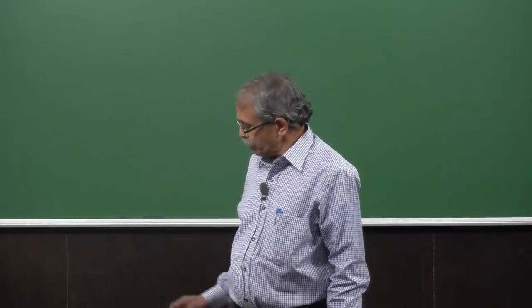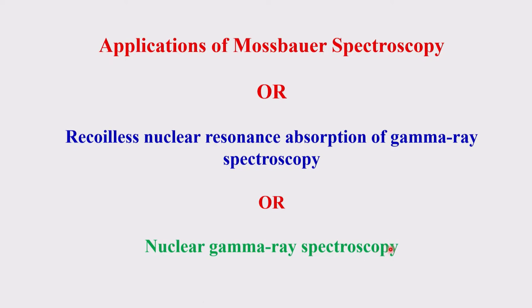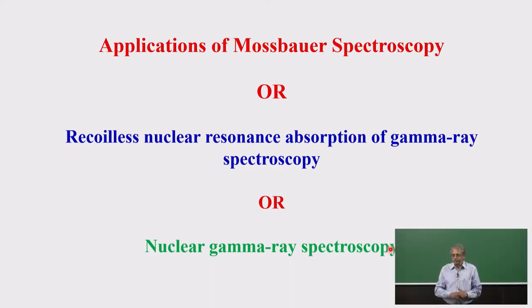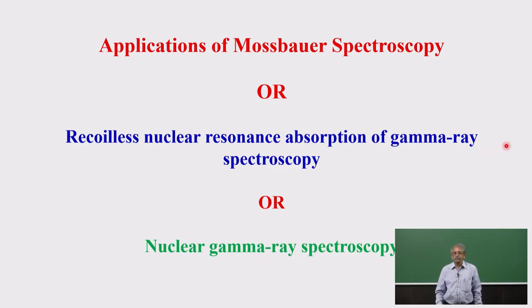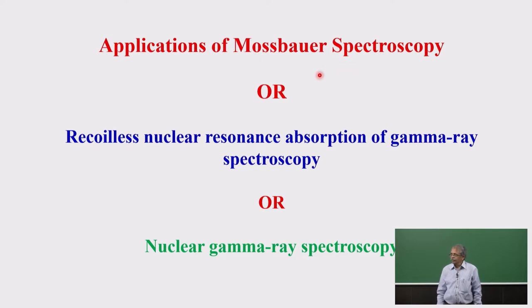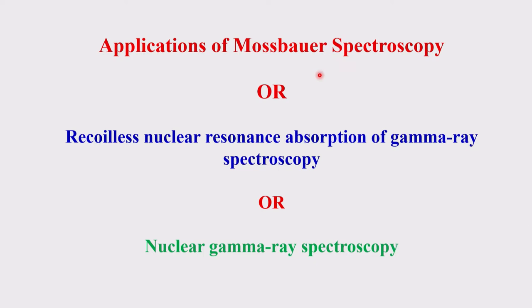Mössbauer spectroscopy is also known as nuclear gamma ray spectroscopy, because these are nuclear transitions that we are looking at. It is also known to physicists as recoilless nuclear resonance absorption of gamma ray spectroscopy. Chemists use the term Mössbauer spectroscopy, while physicists use the term recoilless resonance absorption gamma ray spectroscopy. It is basically a gamma ray that brings the nuclear transitions.